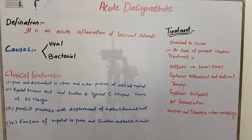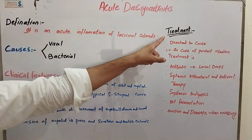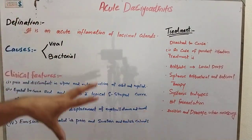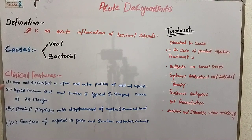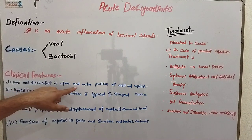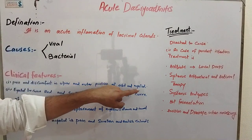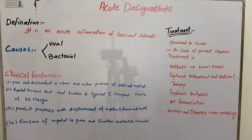Now the clinical features — this part is very important. There are four clinical features. The first and most important is pain and discomfort in the upper and outer portion of the orbit and eyelid.